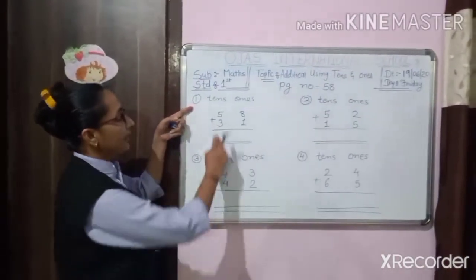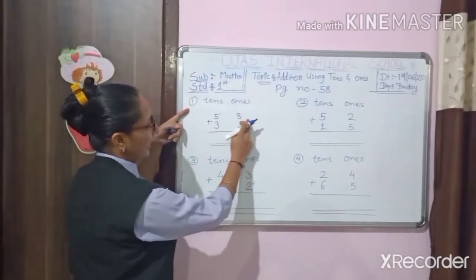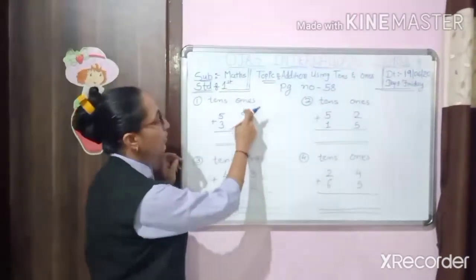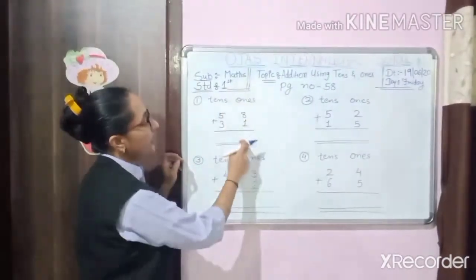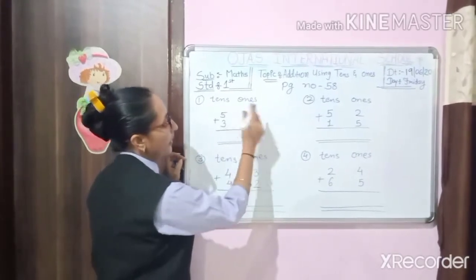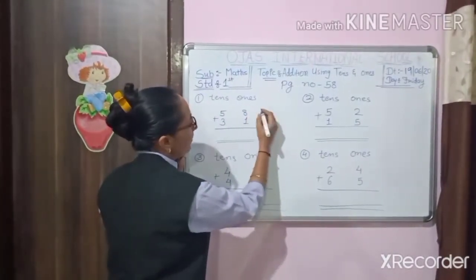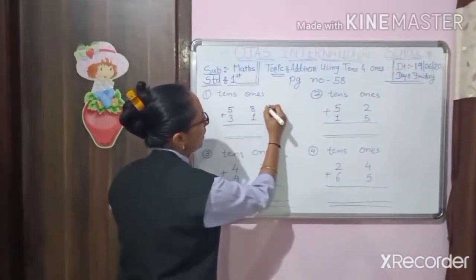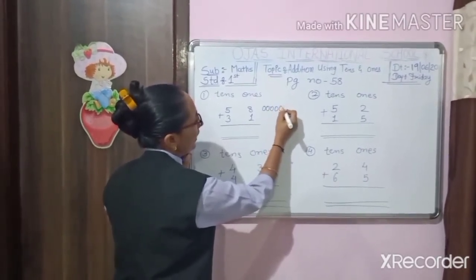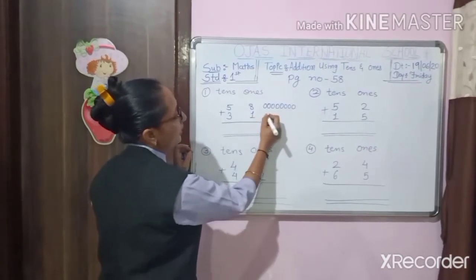Here number 1, 10s and 1s. Here written 58 and here written 31. So first we add only the 1s place number. So we have to add the 1s place number: 1, 2, 3, 4, 5, 6, 7, 8 and then 1.